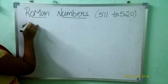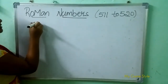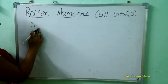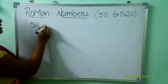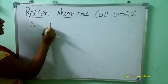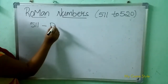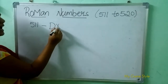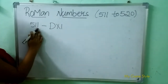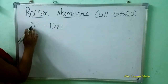Let's start. 511 is 500 and eleven. So how to write Roman number 511? D is 500. XI is eleven. So this means 500 and eleven, which is 511.